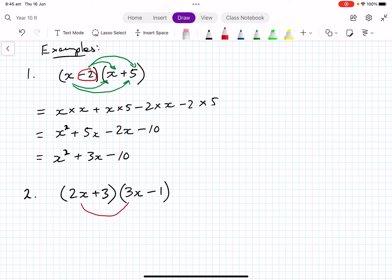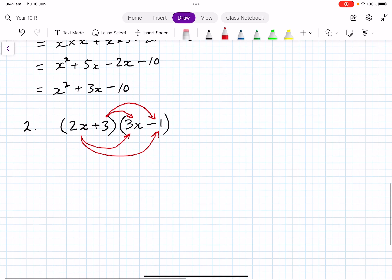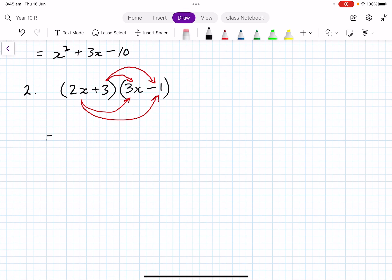And we do first, outside, inside, last, and we just follow that through. So if I was to go through that, we can say it's equal to 2x times 3x, that's the first one. First two terms are multiplied together. Then we get 2x times minus 1. Then we get 3 times 3x. And then I get 3 times minus 1.